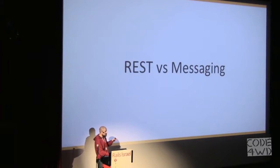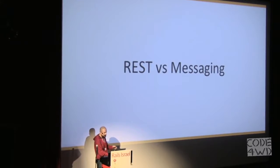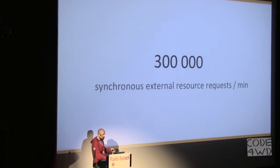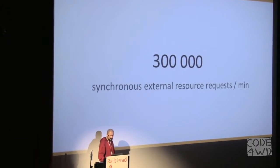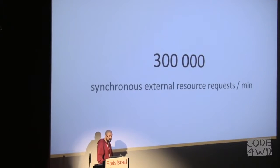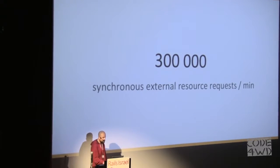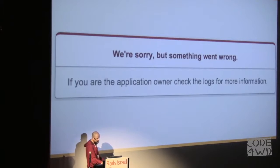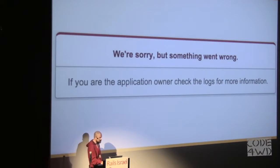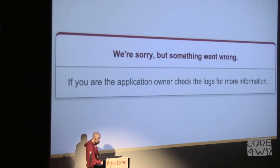There are two main models for microservice interaction: REST and messaging. At GetTaxi we're using both models, but synchronous REST communication takes a bit higher request rates. For instance, 300,000 external resources are being requested synchronously every minute. And as I said, we suffered a lot from failures, so I'll talk about things that helped us increase system resistance to those accidental failures.